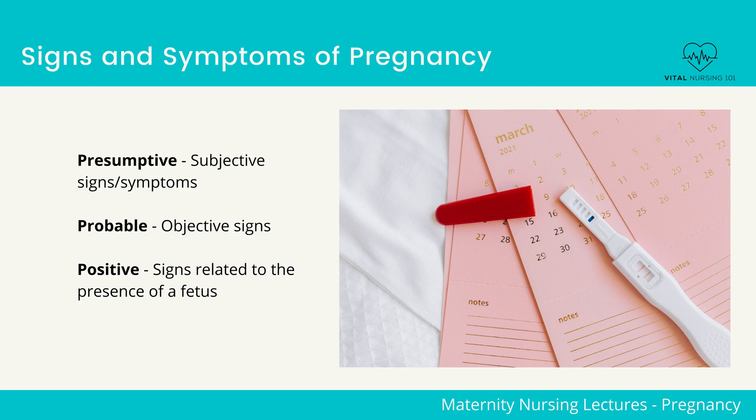Amenorrhea. Fatigue. Nausea and vomiting. Urinary frequency. Breast changes such as dark areola. Quickening, which is a slight fluttering movement of the fetus felt by the client — this usually happens between 16 to 20 weeks of gestation.